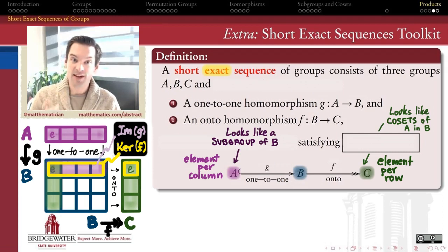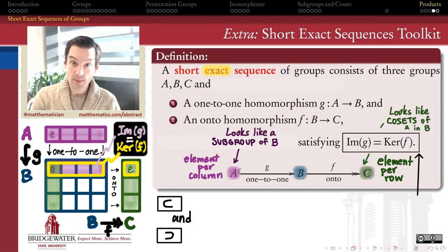And to say that this is an exact sequence means that those two sets are the same set, that the image of G and the kernel of F, each of which is going to be a subgroup of B, by definition of homomorphism,